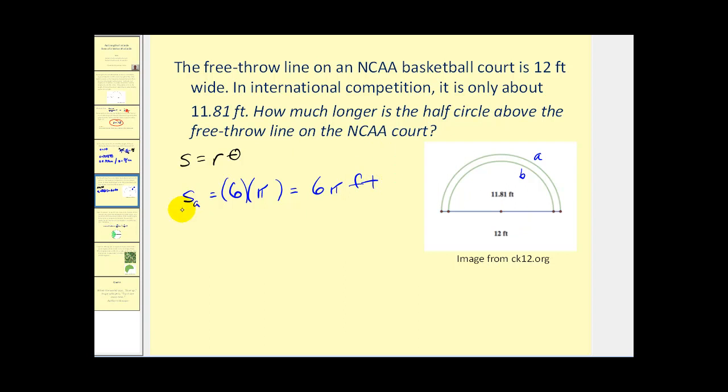The smaller arc length, S sub B, equals the radius, which is half of 11.81 feet—11.81 divided by 2—and then again our angle θ is π. We'll leave this in terms of π for right now. But the question is, how much longer is the larger half circle than the smaller half circle? So we need to find the difference.